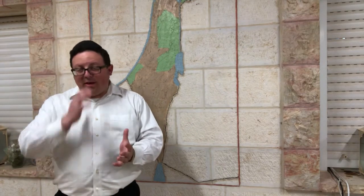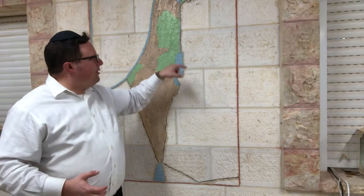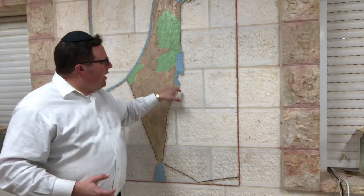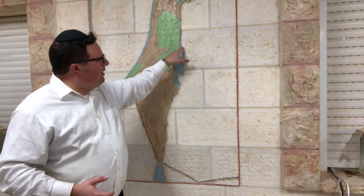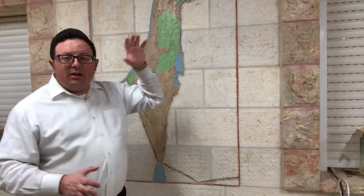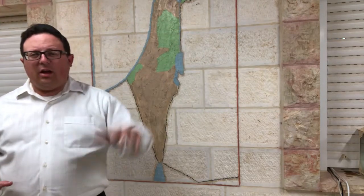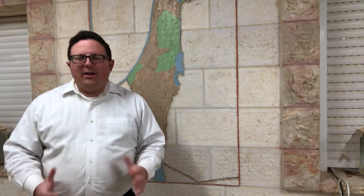I happen to know the answer because I live right here in a place called Mitzvah Yericho. And right over here, if you were standing here on the Jordanian Mountains looking over into Eretz Yisrael, like Moshe Rabbeinu did, you would have seen the most beautiful part of Eretz Yisrael.